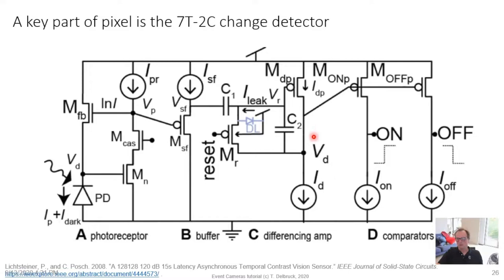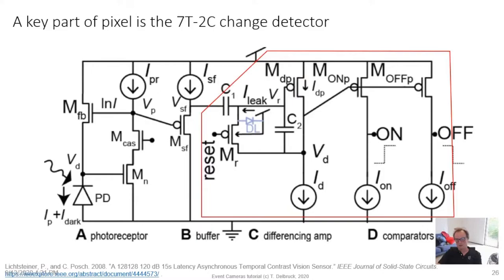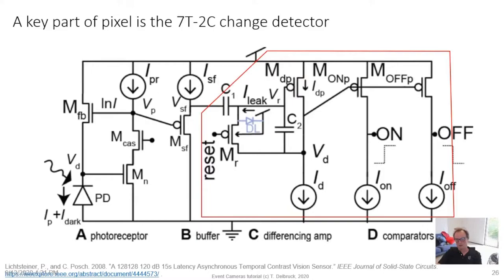There is a junction leakage from V_DD of the pFET through a parasitic diode to this node, causing background leak events at about 0.1 Hz — increasing with temperature and light intensity through parasitic photocurrent. You want to make sure this node is covered with metal so light doesn't fall on this parasitic photodiode. But the beautiful main characteristic of the circuit is that it results in a temperature-independent contrast threshold.